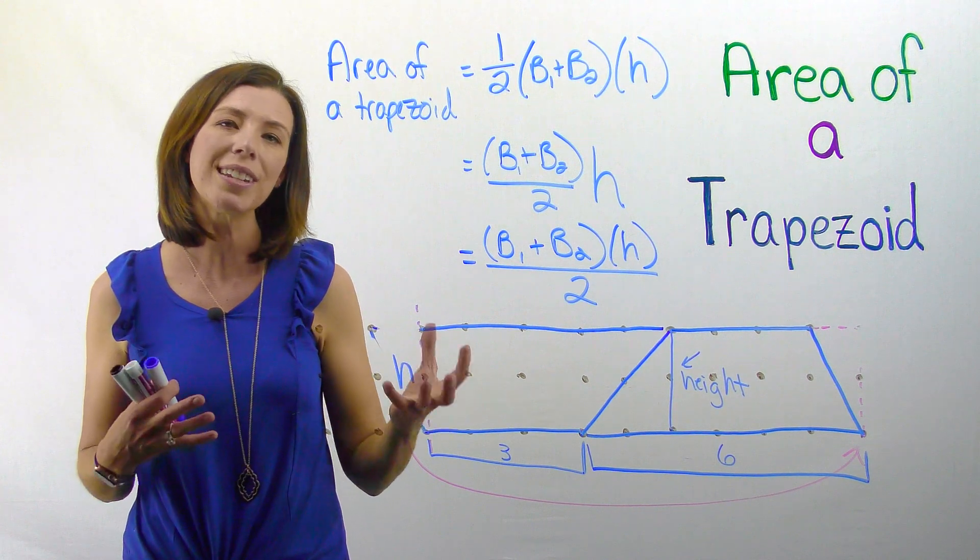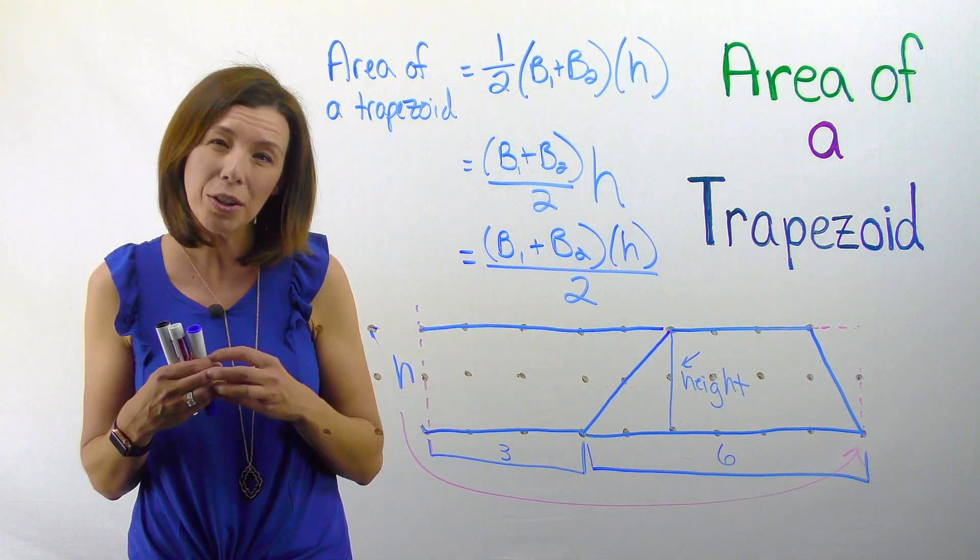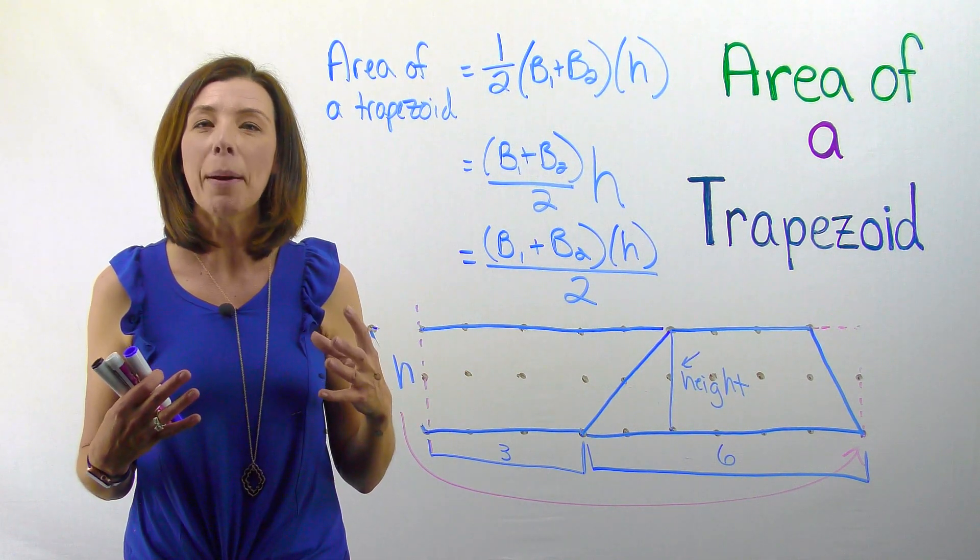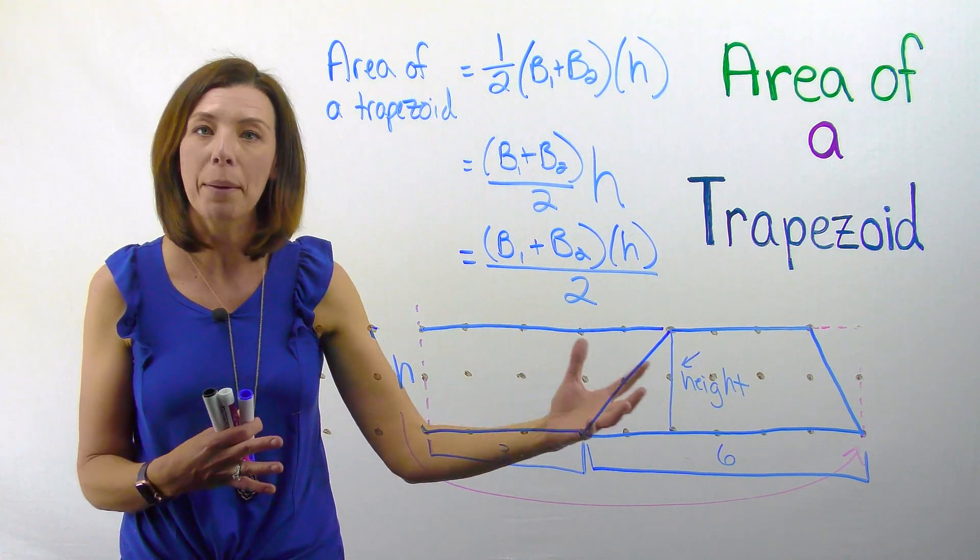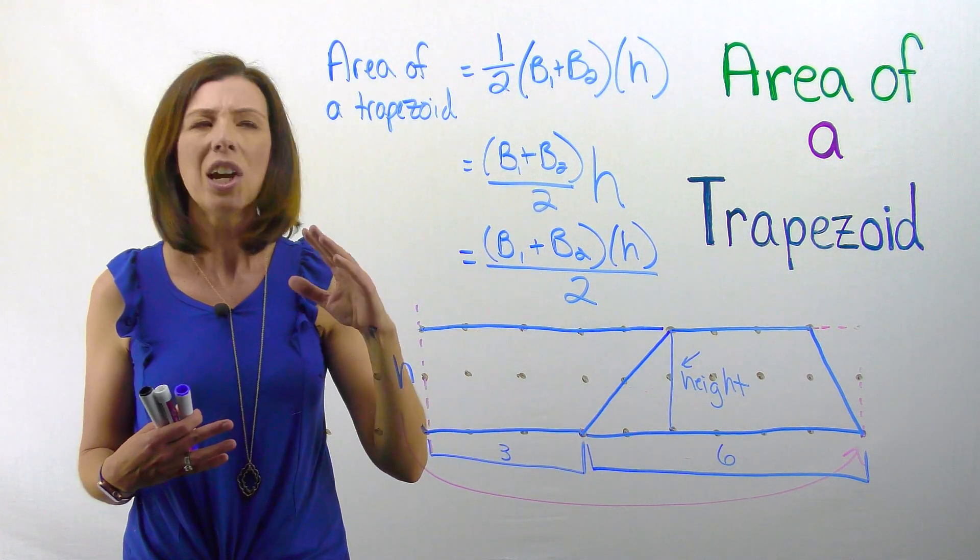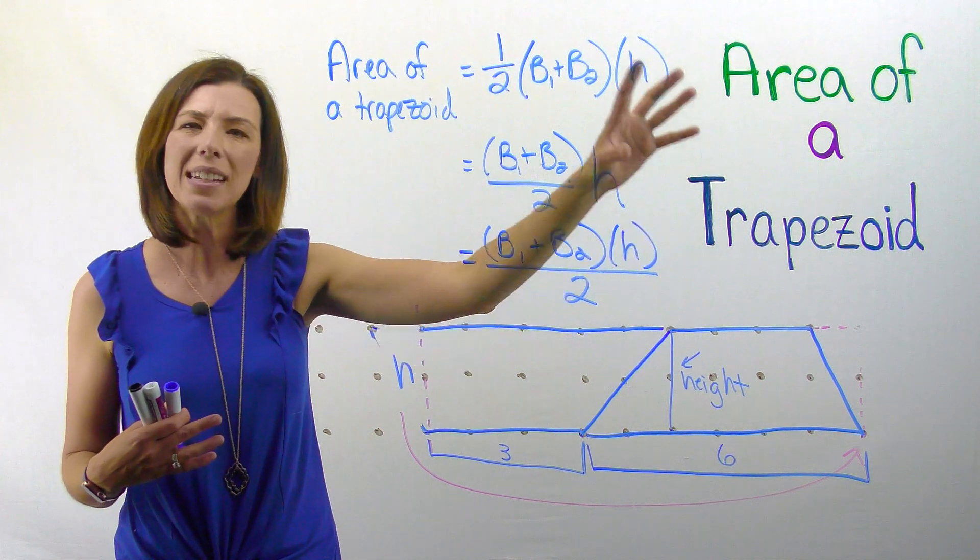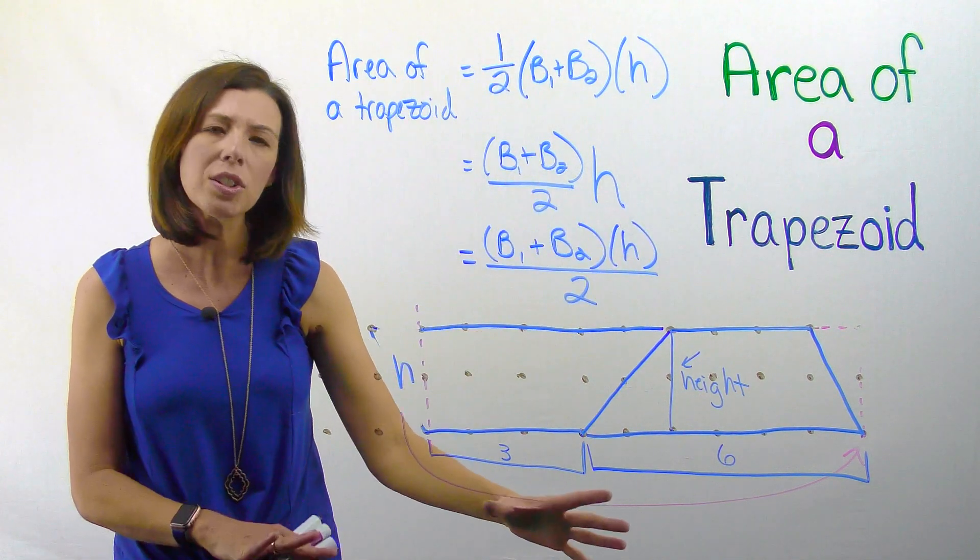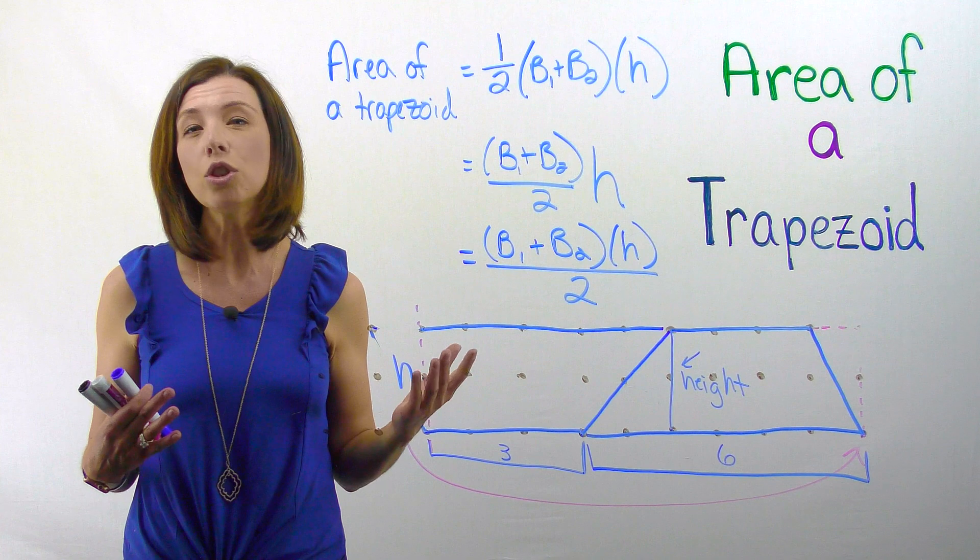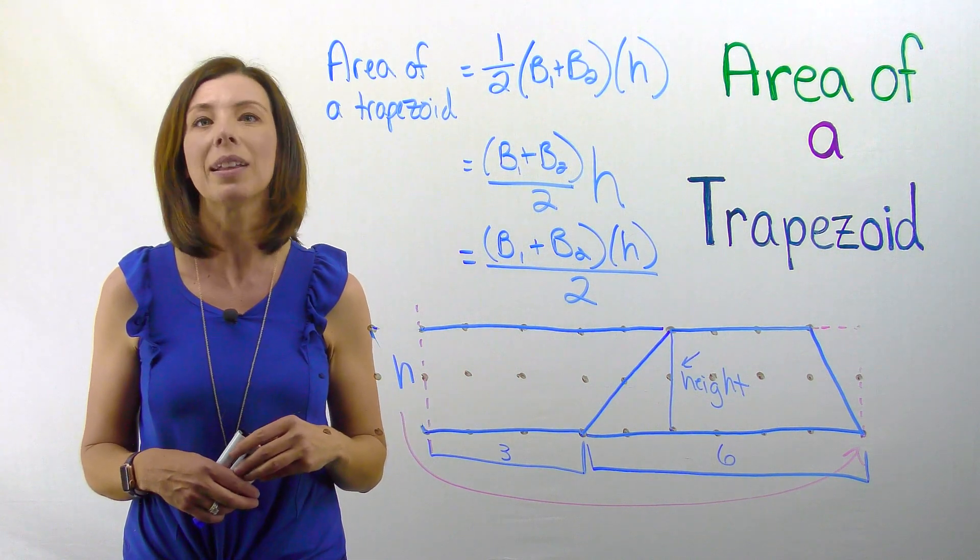So remember, we always want to first stay in the conceptual, the concrete, right? Then we want to think about being able to move to the pictorial, being able to draw a picture, and lastly move to the symbolic. So we don't ever want to start by teaching children the symbolic. We want to first start in the concrete so that they really truly internalize where that formula is coming from.